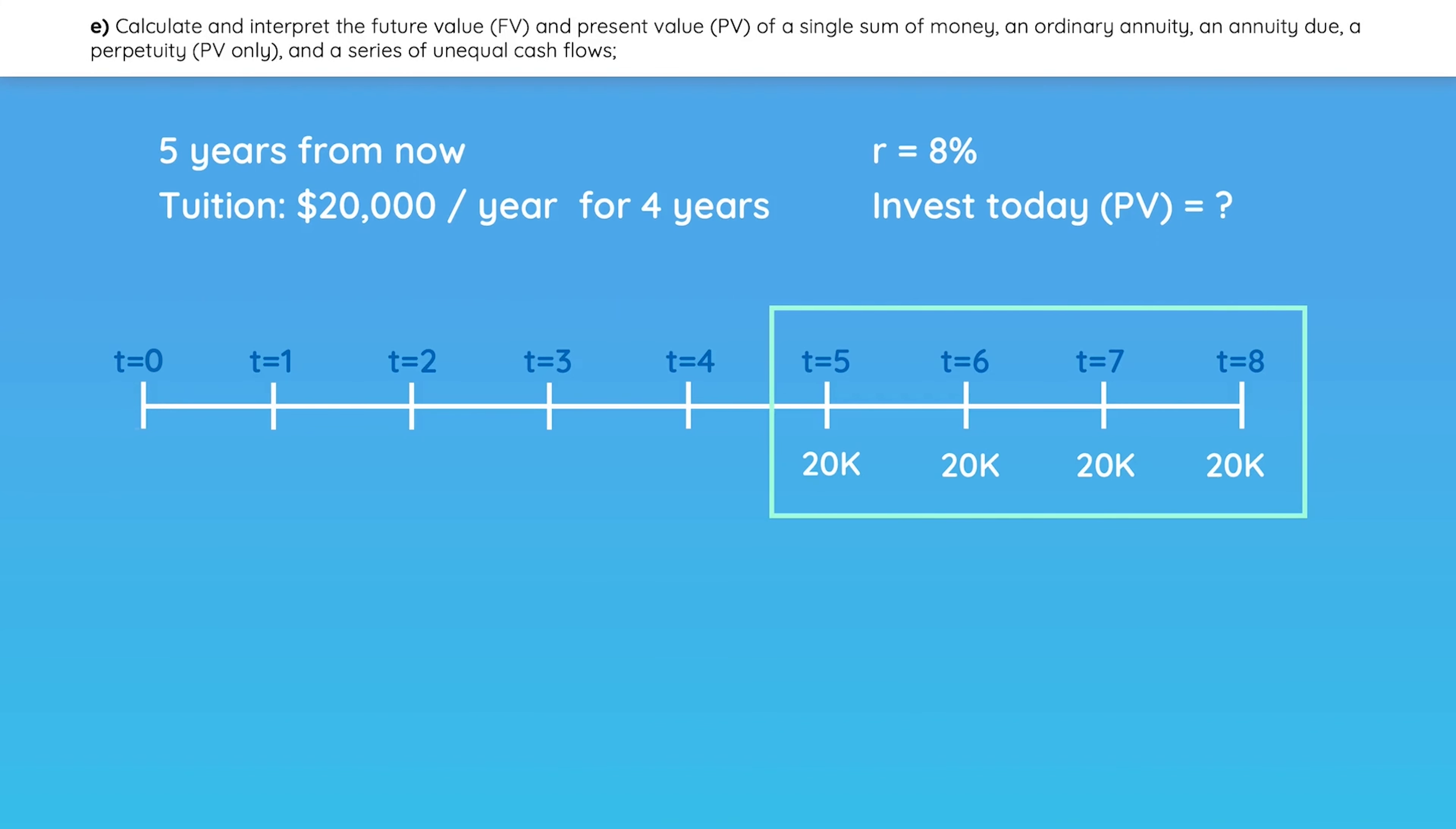Using your calculator to get the present value will save you a lot of time, so let's plug in the following. N is four years. The required rate is 8. Payment is negative $20,000. Future value is zero, and we need to compute the present value.